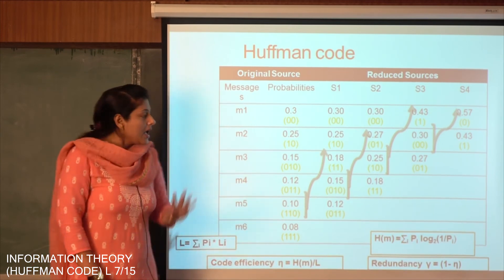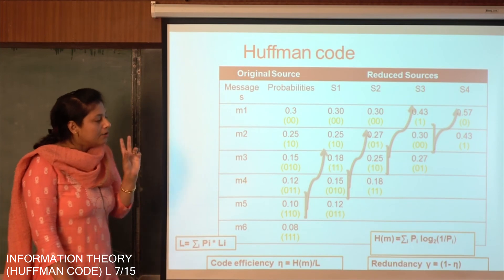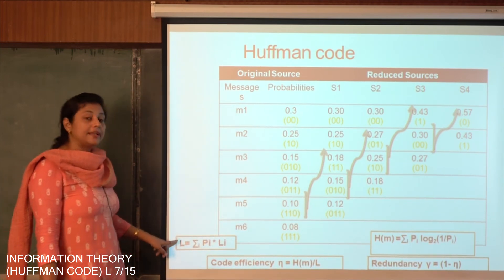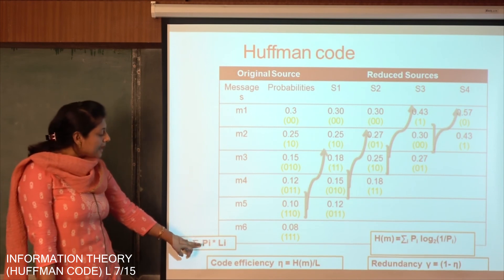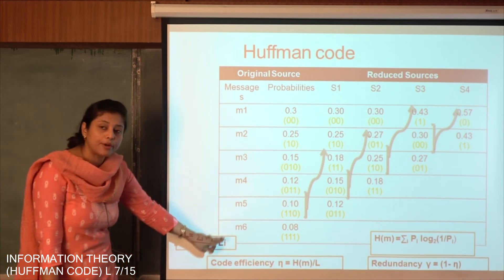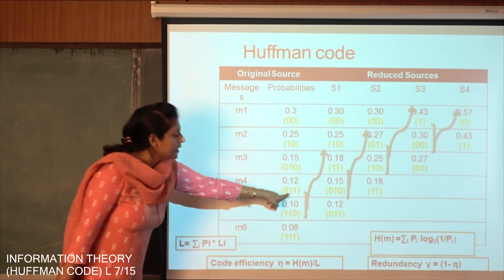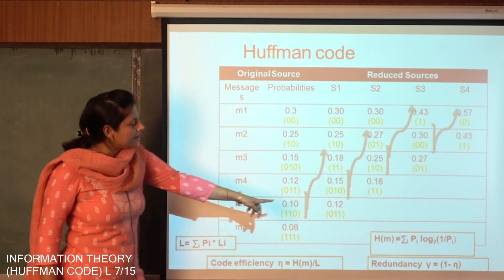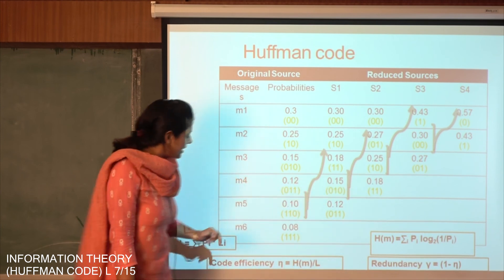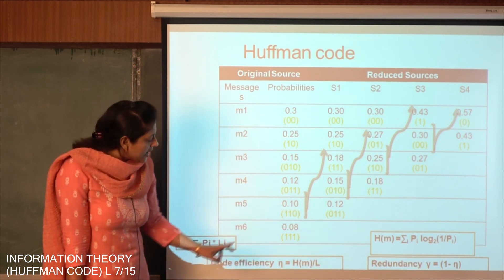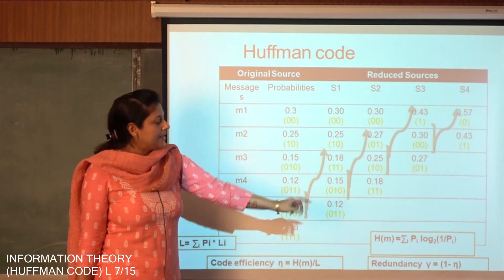So this is the idea after calculating the table. We have to have four different parameters. We have to calculate L, that is the total number of bits required to encode this source, which is given as summation of pi multiplied by li, where li is the number of bits per message. Then we have to find out the entropy of the source which is given as summation of pi log of 1 by pi. And the last two are the code efficiency and redundancy, where code efficiency is given as eta equal to entropy by L and redundancy gamma is given as 1 minus eta.